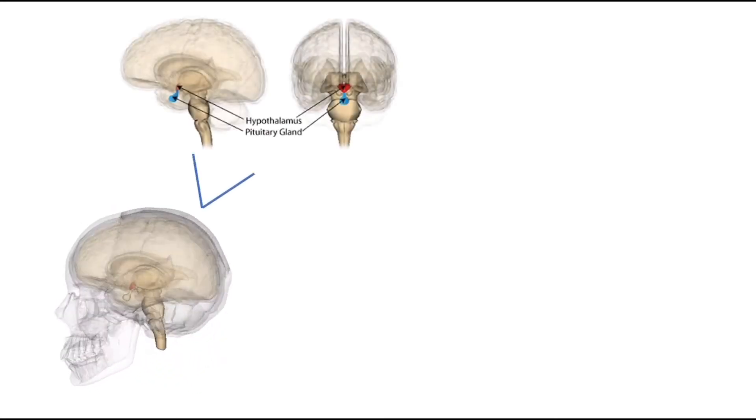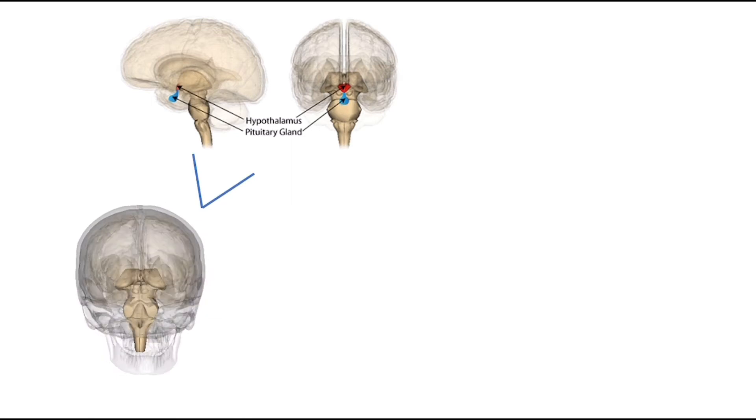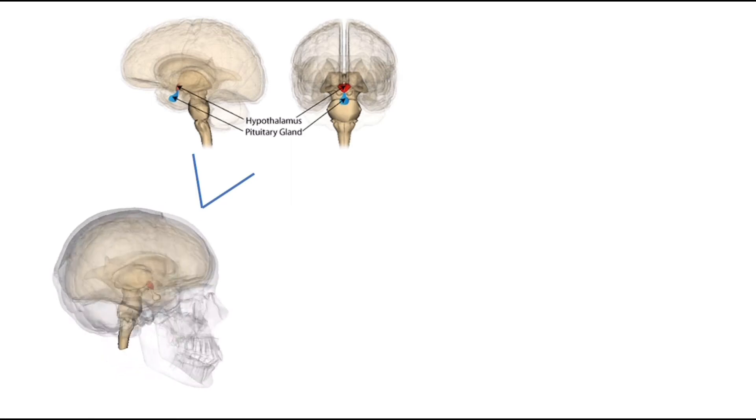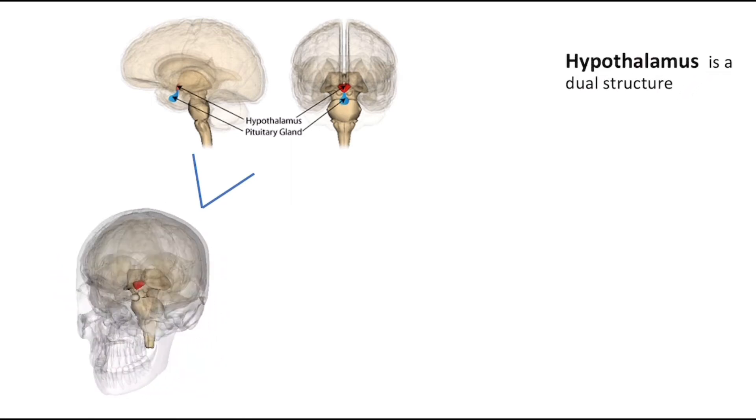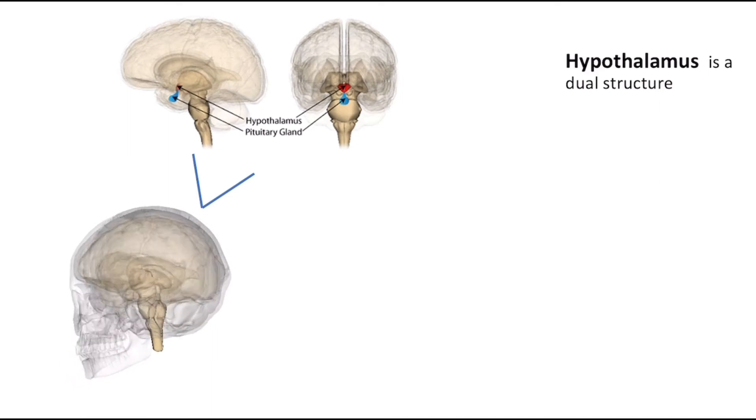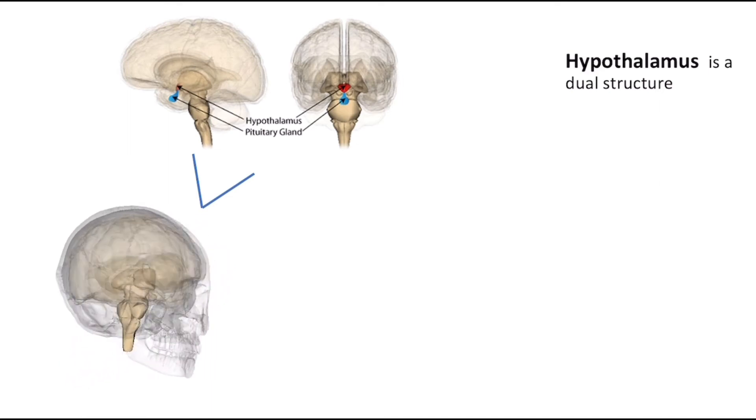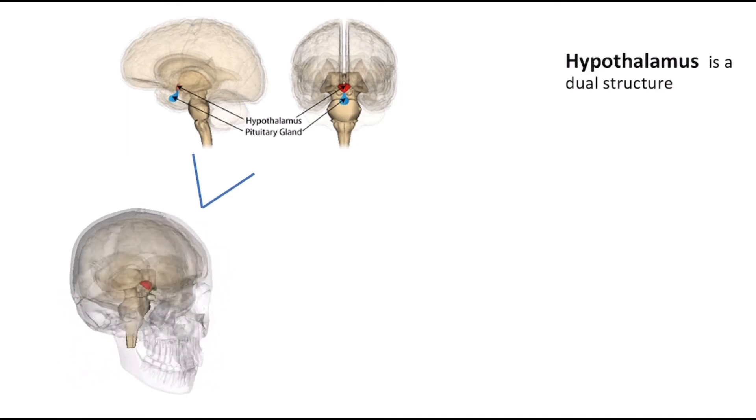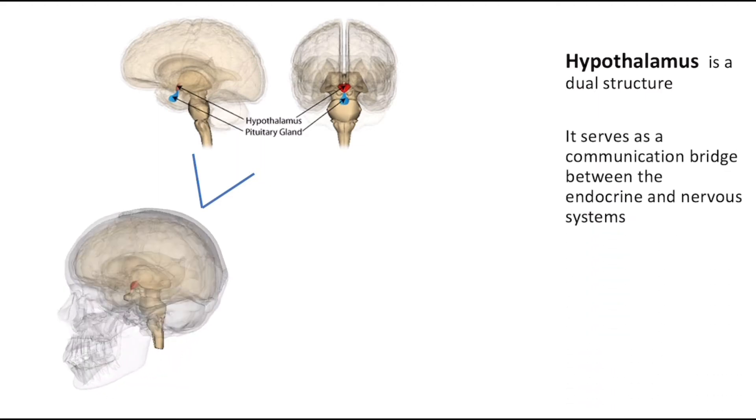Perhaps the most important structure in the endocrine system is the hypothalamus which is located just below the thalamus and directly above the pituitary gland which it controls. The hypothalamus is actually a dual structure as it is part of both the nervous and endocrine systems. In fact the hypothalamus serves as a communication bridge between both systems.